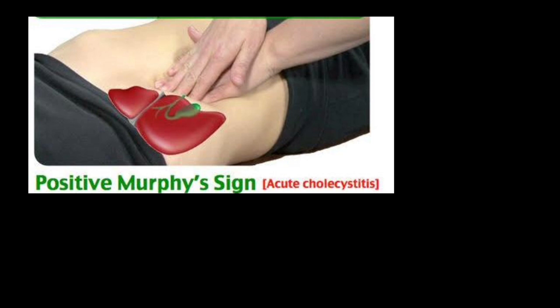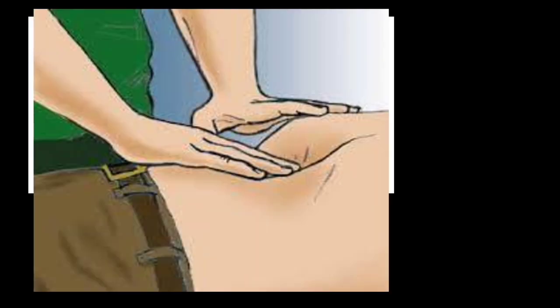Murphy's sign: it is seen in cholecystitis. To elicit it, ask the patient to exhale, then the examiner places a hand below the costal margin on the right side at the mid-clavicular line, and the patient is instructed to inspire.